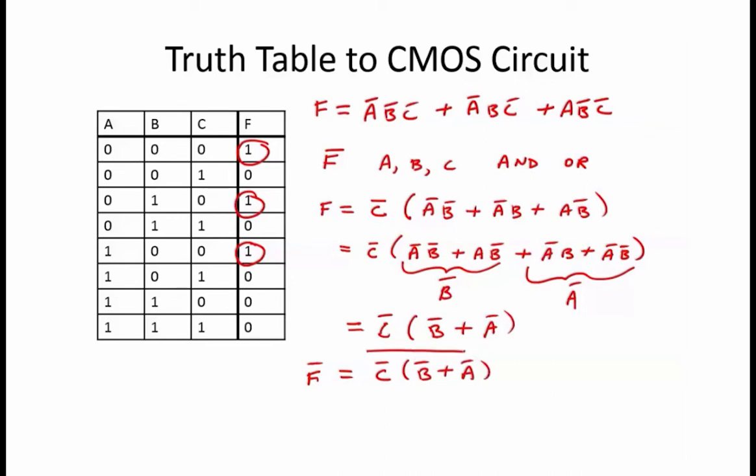To simplify this, we make use of De Morgan's Law, which states that NOT of A and B equals NOT A or NOT B, and that NOT of A or B equals NOT A and NOT B. So NOT F equals C or NOT of NOT B or NOT A, and finally NOT F equals C or B and A.